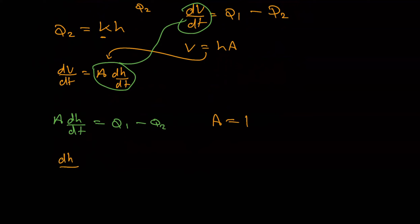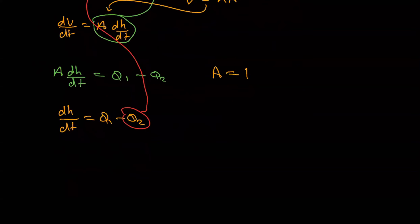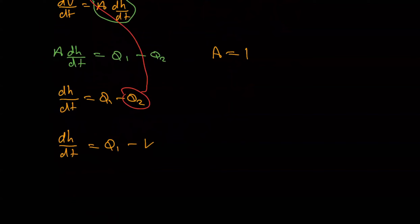Since q2 equals k times h, we can rewrite the equation as dh/dt = q1 minus kh. That's our model.